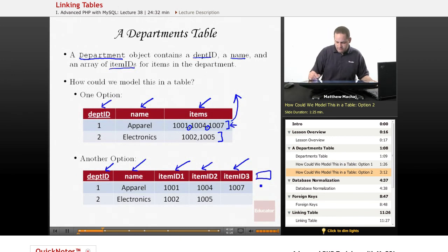Additionally, if we add a fourth item, for example, 1008, to our first department, and it still only has two items for department number two, now we have two empty spaces in our database. And so this is stuff that takes up space in our database, and basically one of the goals is you want to avoid having a lot of empty space within your database.